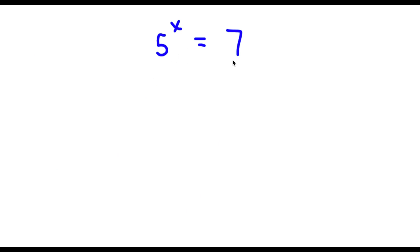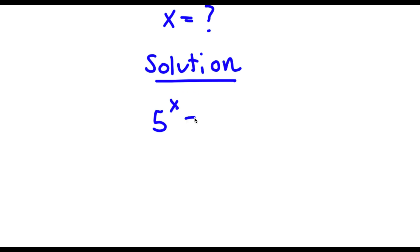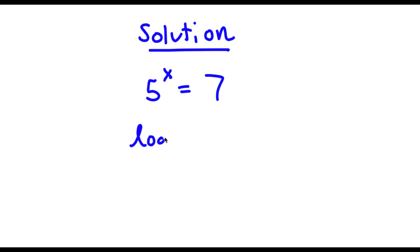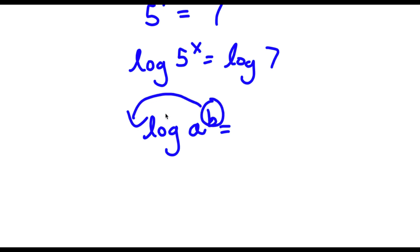Alright, so I have 5 to the power of x is equal to 7, and I want to find the value of x. Starting with 5 to the power of x equals 7, I'm going to take the log on both sides. So now I have log of 5 to the power of x is equal to log 7. Now, if I have something in the form log a to the power of b, I can move the exponent b to the front of the logarithm, giving b times log a.